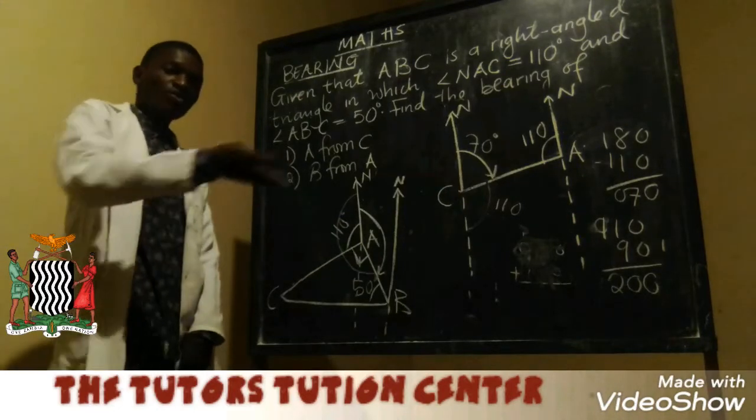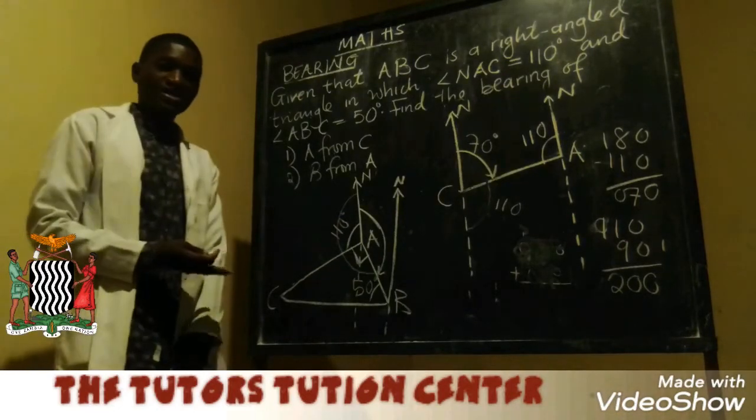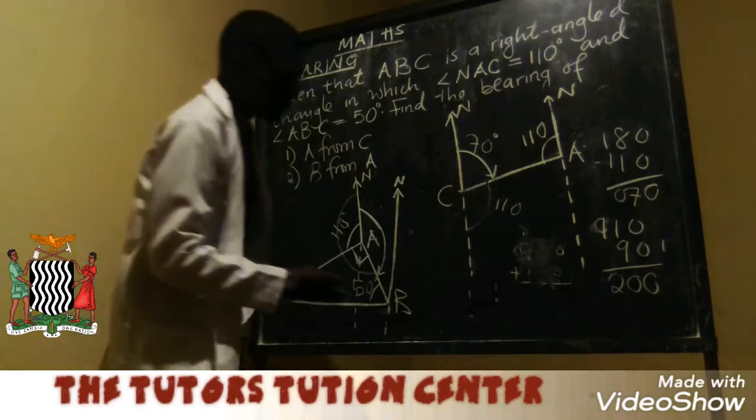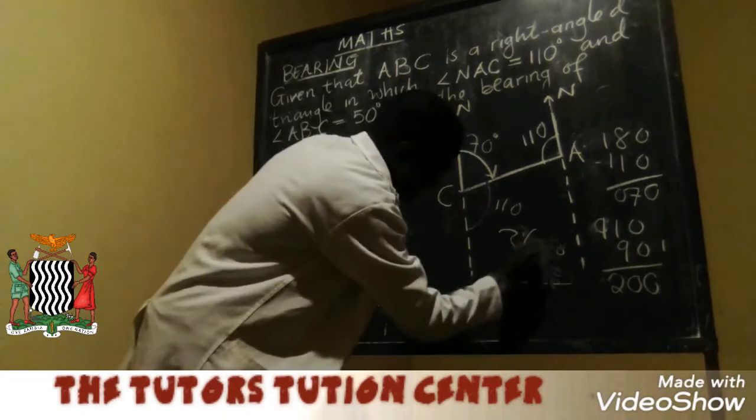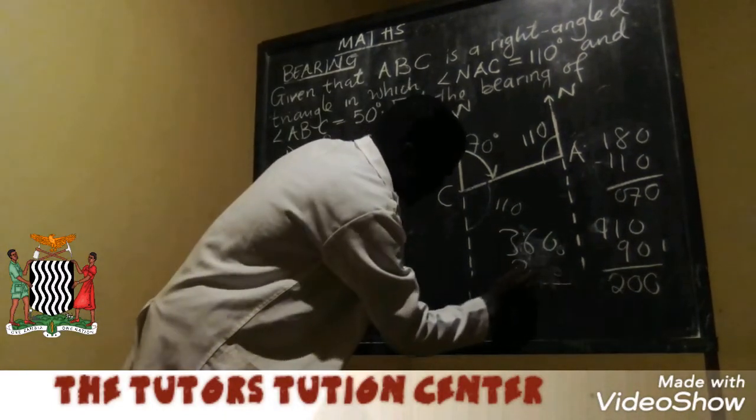Now what could be this angle? Since a complete tail is always 300, so meaning we are saying 300 minus 200.